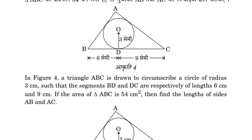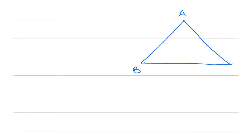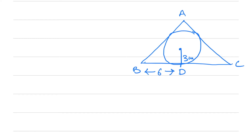Question 6: In this question we are given a triangle ABC circumscribing a circle of radius 3 centimeters. Point D is given as 6 centimeters and another side is 9 centimeters.